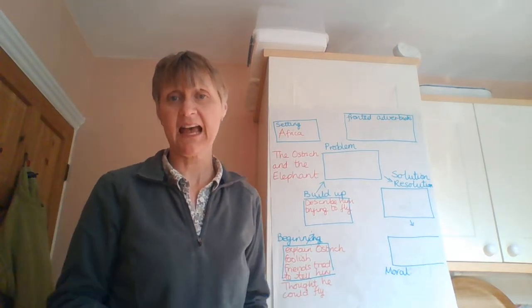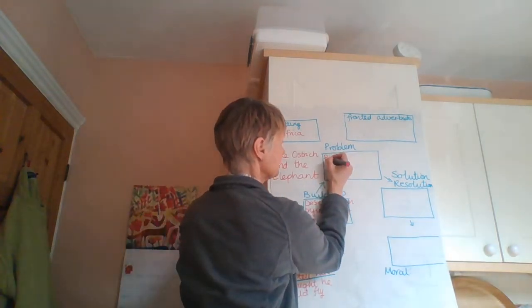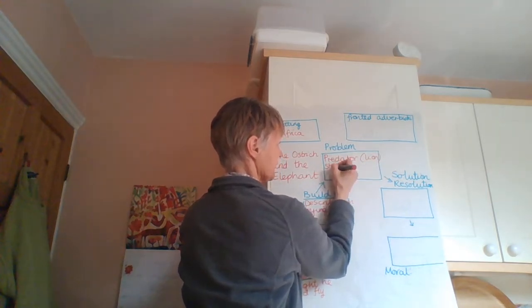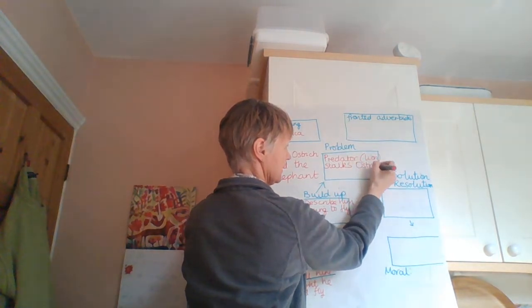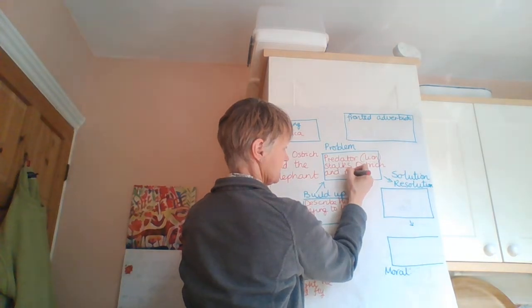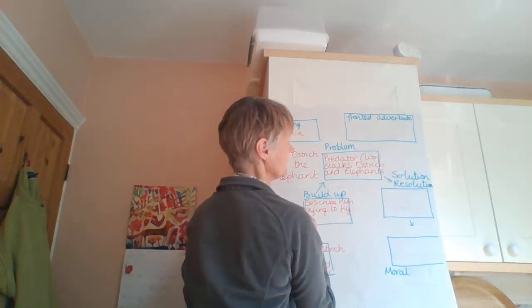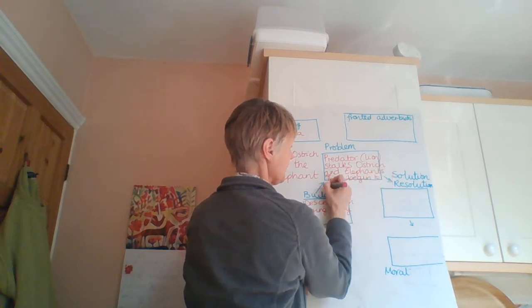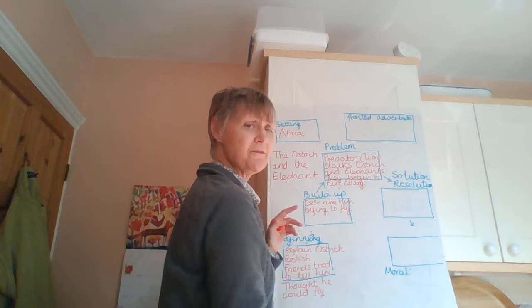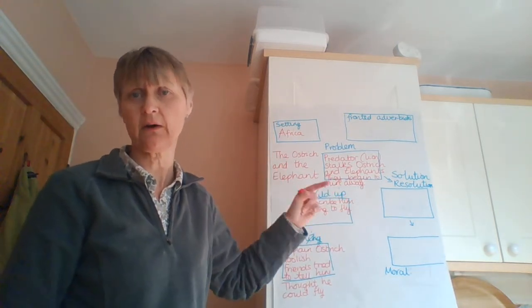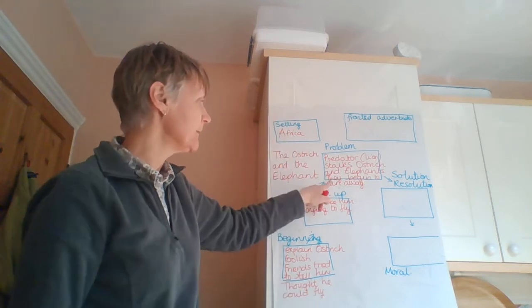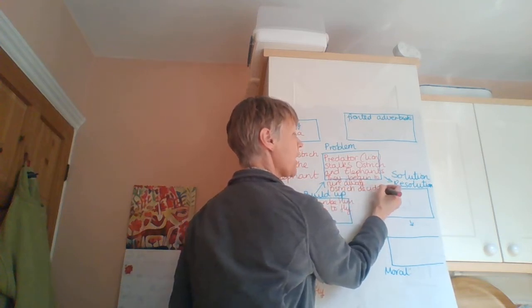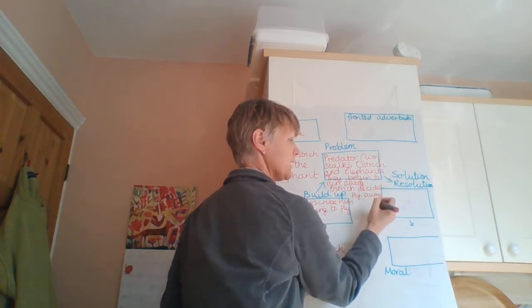The problem is that it's going to be that a lion comes along and all the creatures want to escape from the lion because the lion wants to catch one of them and eat it. So, a predator, lion, storks, ostrich, and elephants. They begin to run away. So, this is all notes. It is not a very good story because there is not enough description and there's not enough detail. This is just you getting your plot sorted in your head. Ostrich decides to fly. He's going to fly away. Of course, the problem is he can't actually fly.